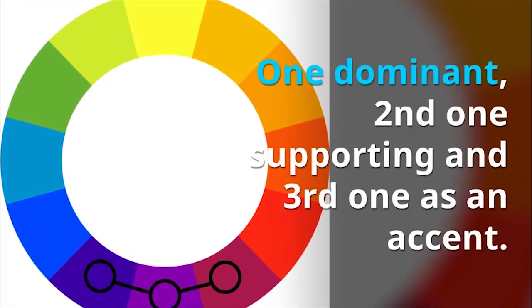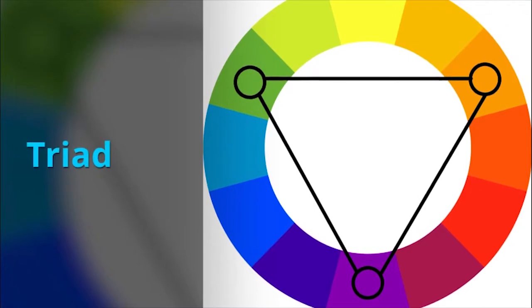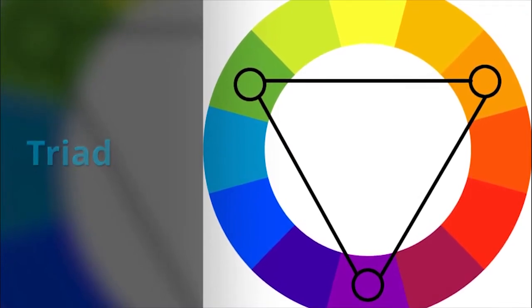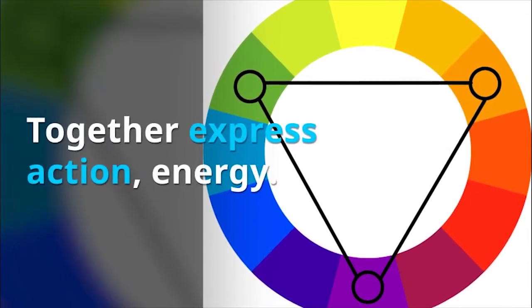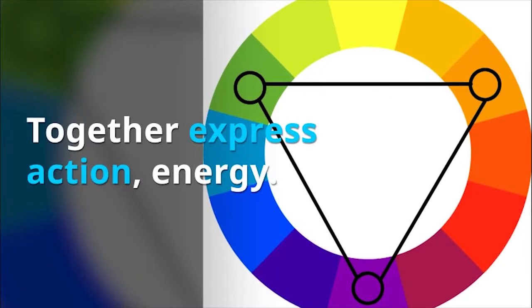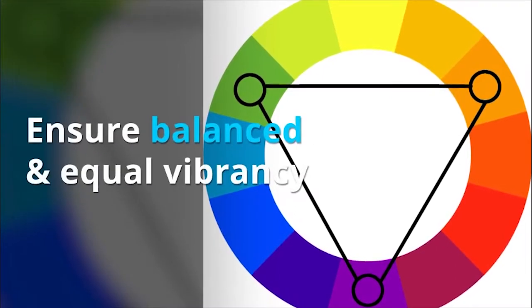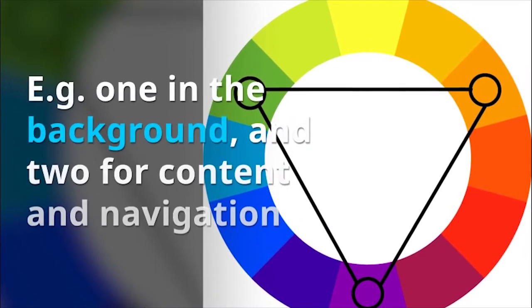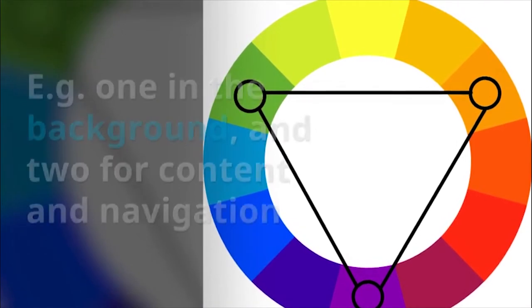And a third one as an accent. Triad: Together they express action and energy. Ensure balanced and equal vibrancy. For example, one in the background and two for content and navigation.